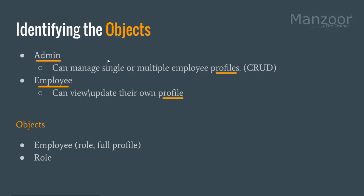Admin and employee are both employees, and the complete information about an employee is their profile. So what we have is an employee with two roles — one is admin and the other is user — and the complete information of the employee is the profile. In simple terms, we get two objects: employee and role. We differentiate admin and normal employee using role. The relationship between role and employee is one-to-many: one role can have many employees, but one employee belongs to one role for our requirement.